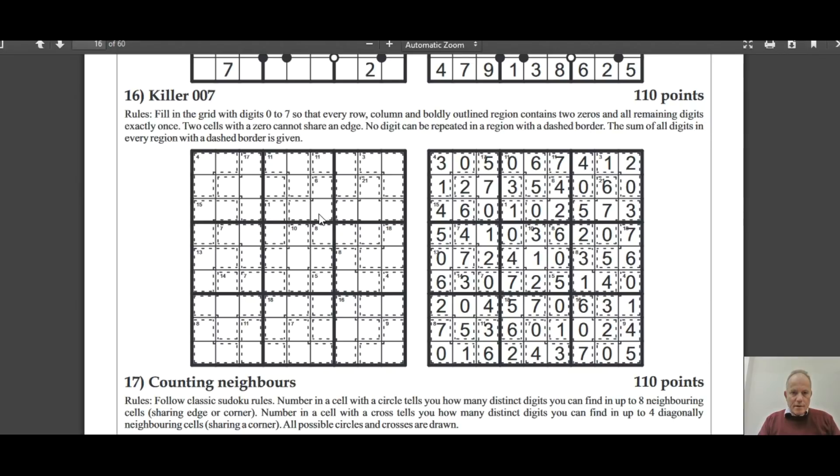Killer 007. This one you don't use one to nine anymore - you're using one to seven and two zeros. And the killer cage totals are given as usual. The two zeros can't share an edge, but they can be diagonally next to each other.